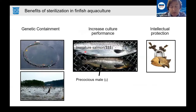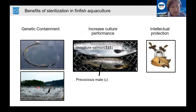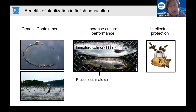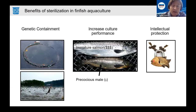The problem we're trying to solve is both economic and environmental. Sterility can prevent farm escapees from breeding with wild populations of fish and from establishing feral pest populations. Sterility can also increase culture performance by blocking gonad development and the problems associated with early sexual maturation. In the salmon industry alone, economic losses from early sexual maturation are estimated at half a billion dollars. Additionally, sterility will likely stimulate investment in genetic breeding programs by giving breeders and genetic companies the peace of mind that their proprietary genetics can be fully protected.